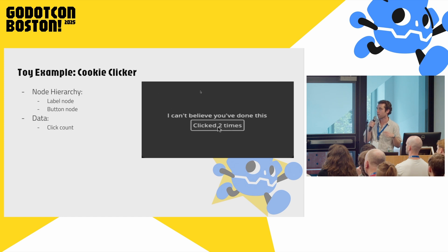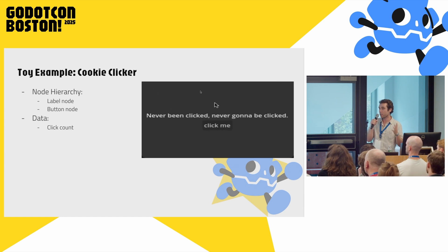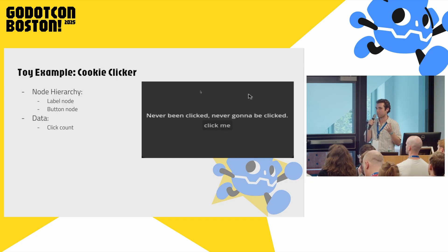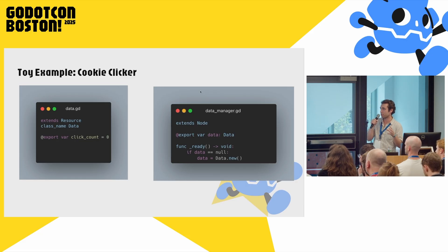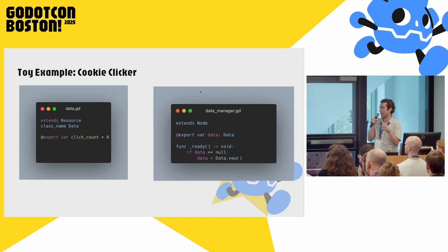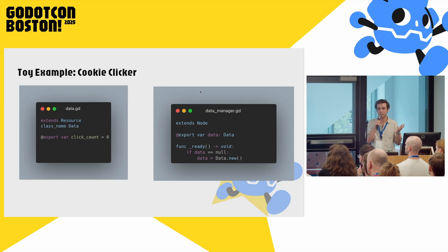Very simple example here: we have a node hierarchy featuring a label and a button, and the only data in this scene is the amount of times this button has been clicked. Both of these nodes care about this data — this is the scary problem from before. We have a custom resource that really just has that click count on it, and we have a single node that exists simply to make sure that this data is available all the time. In its ready method, it just creates a new instance of this resource. Dead simple stuff.